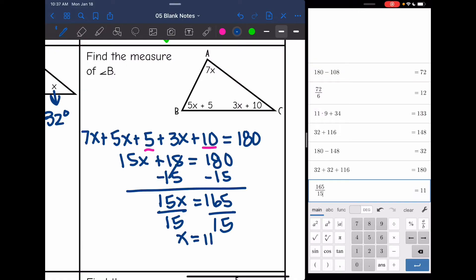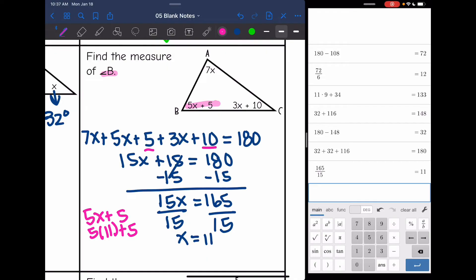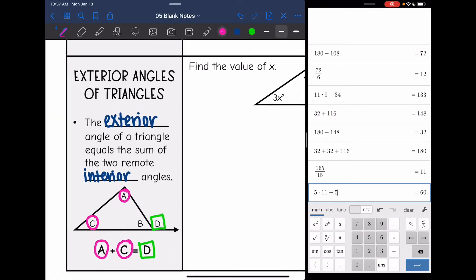I'm not done yet, though, because it asked to find angle B. And angle B is 5x plus 5. So I'm going to substitute x into 5x plus 5. So it'll be 5 times 11 plus 5. And 5 times 11 plus 5 is 60. So that missing angle is 60 degrees.